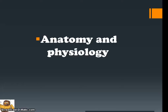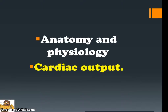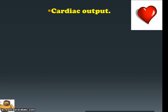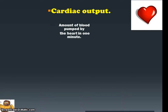Hello and welcome to another of the screencasts. Today we'll be talking about anatomy and physiology, and predominantly cardiac output. In essence, what we're talking about is the heart's ability to provide the body with the blood that it needs. Cardiac output is described as the amount of blood that's pumped by the heart in one minute.